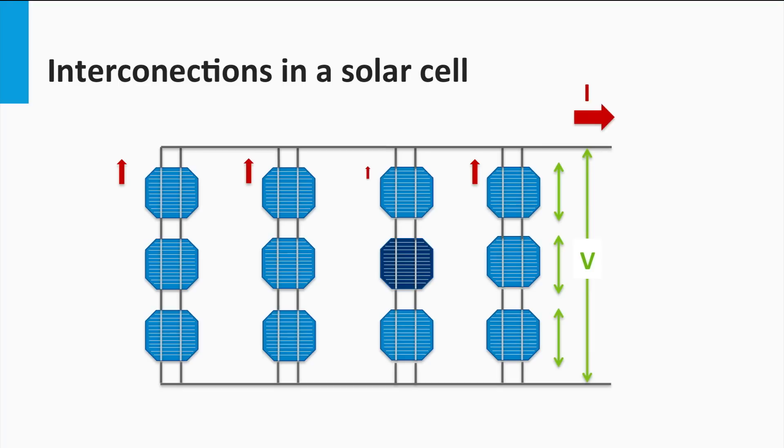For instance, of the M times N cells interconnected, the cell with the lowest current in the M cells in series dictates the module current. Similarly, the cell with the lowest voltage dictates the module voltage. This can be attributed to the non-homogeneity of the cells in mass production. Therefore the module in practice performs a little sub-par compared to the expected performance of their ideally matched and interconnected solar cells.